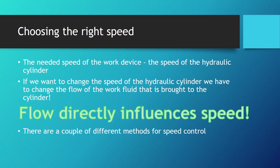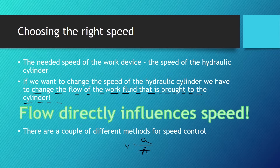We have to change the flow of the work fluid that is brought to the cylinder. Speed is equal to flow divided by area. We cannot change the area of the piston, so we have to change the flow, and flow directly influences speed as we can see from this equation. There are a couple of different methods for speed control which we are going to cover in this lesson.